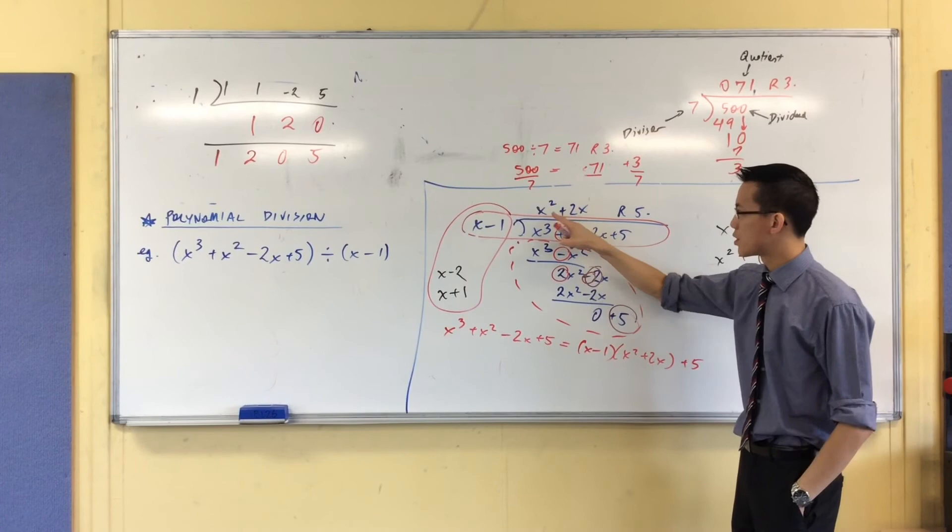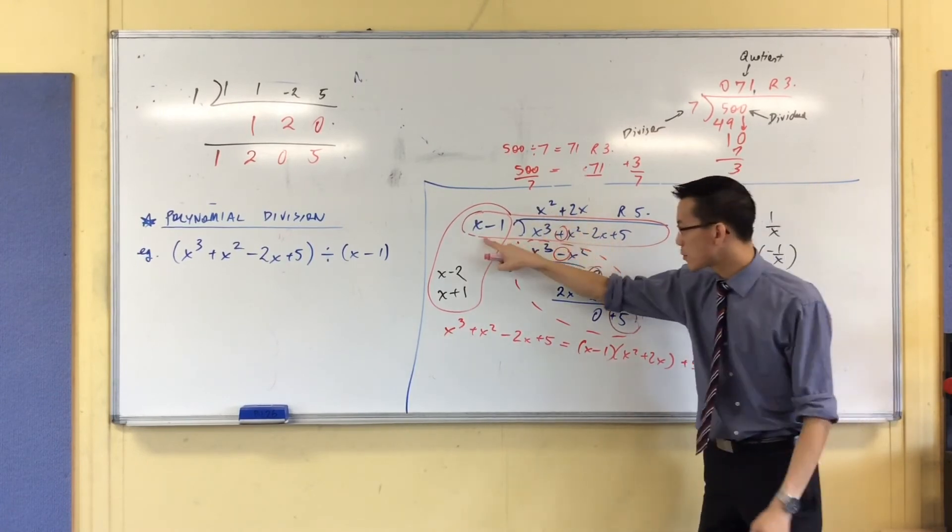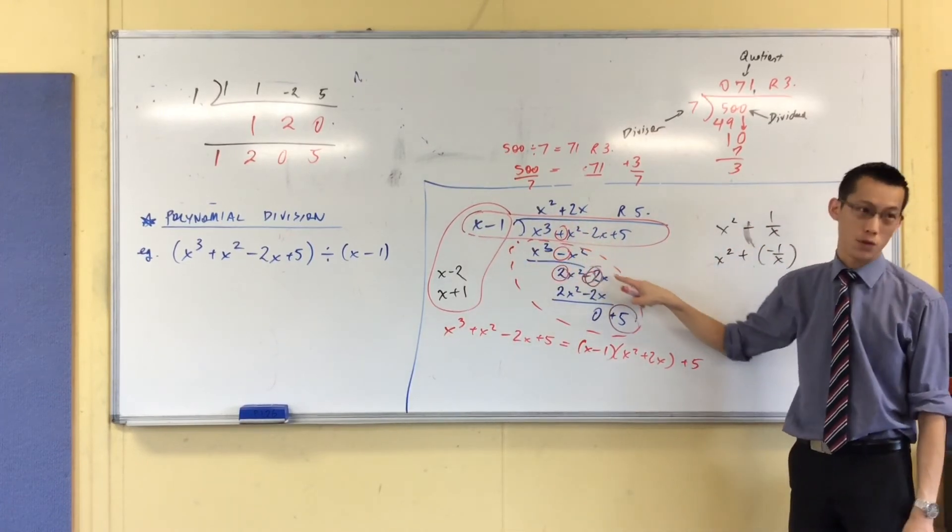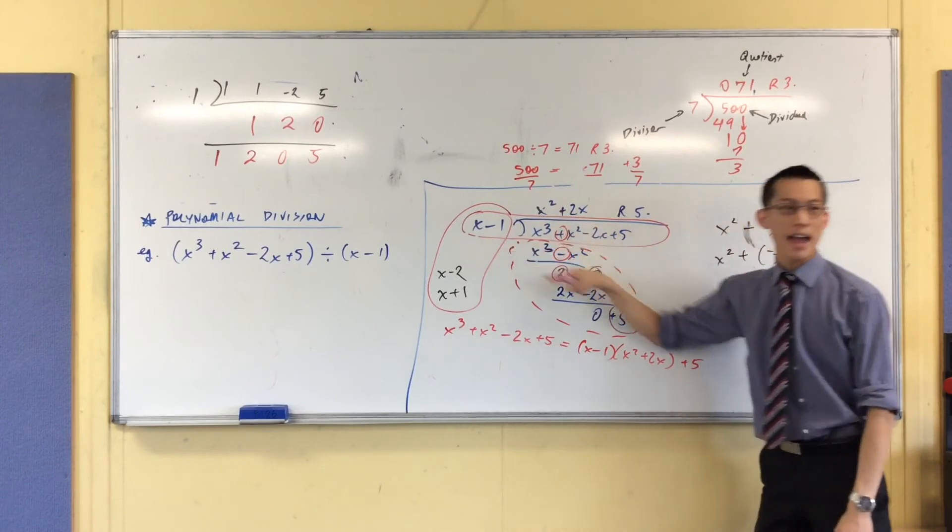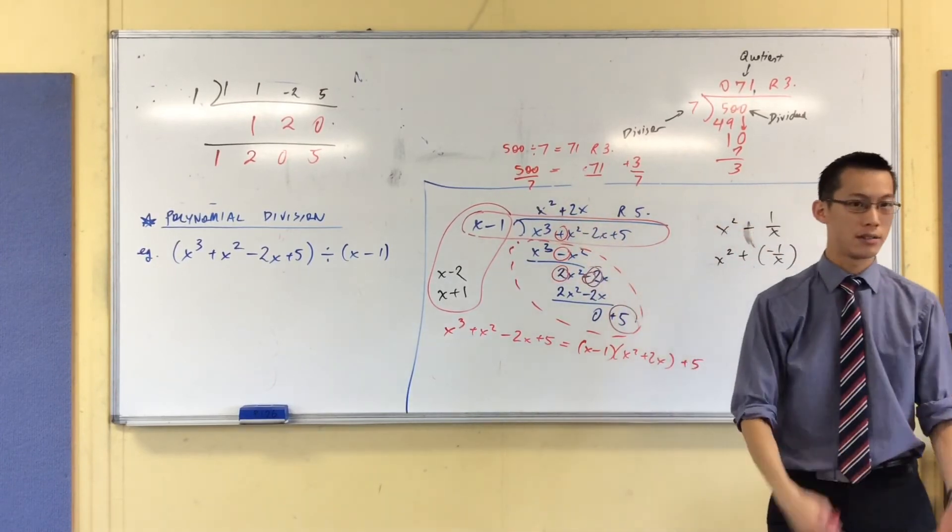Remember how what I was doing was I was getting an answer. I was going to multiply, which gives me this, and then I subtract. And then I multiply and then I subtract. And then I multiply and then I subtract until I run out.